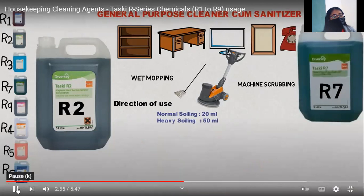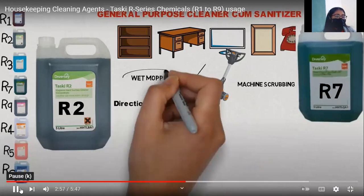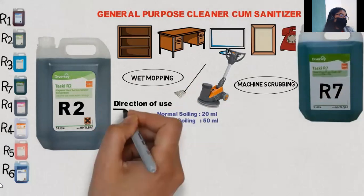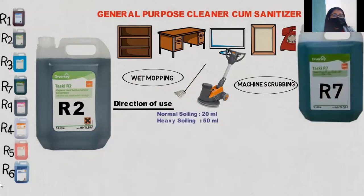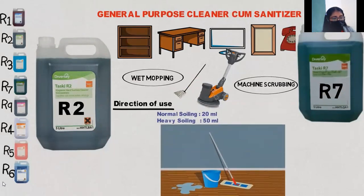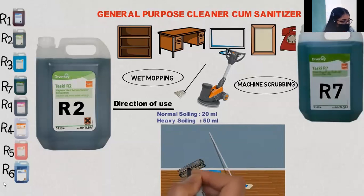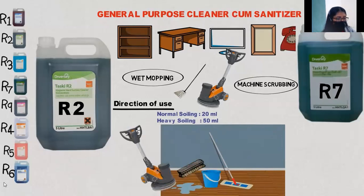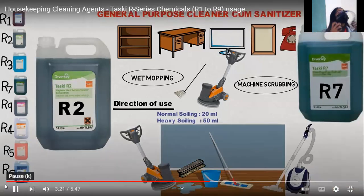R7 is an effective floor cleaner. It can be used for wet mopping and scrubbing with a machine. Dilution depends on soiling: from 20 ml to 50 ml per litre of water. For wet mopping, take the solution in a bucket and mop, wringing the floor frequently. Alternatively, scrub the floor using a manual scrubber or a scrubbing machine, then pick up the dirty solution using a wet vacuum cleaner.